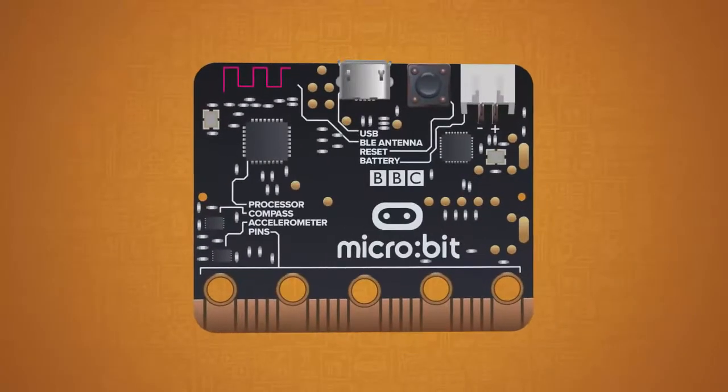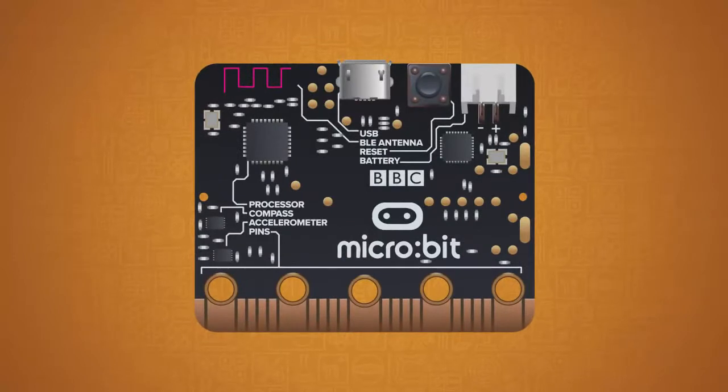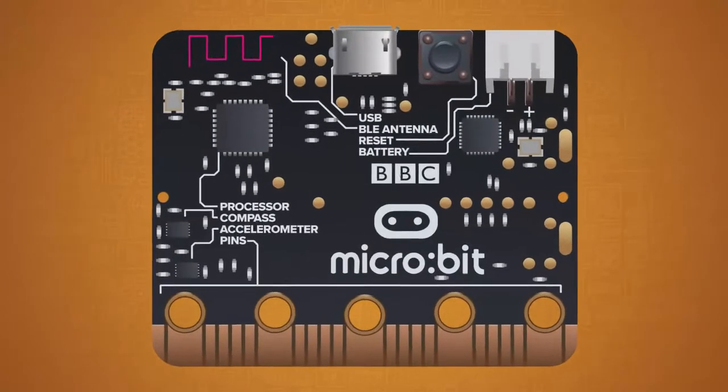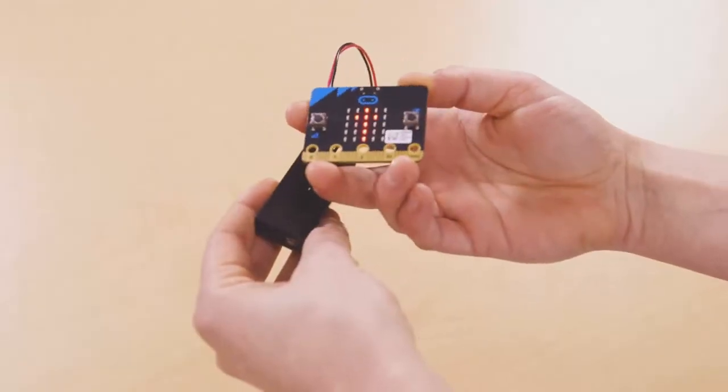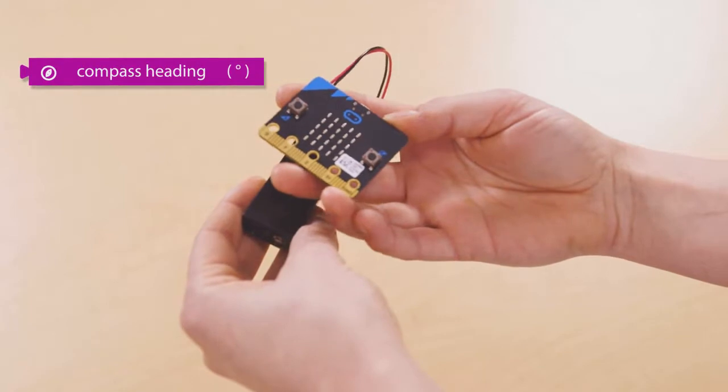On the back of your micro:bit you'll see two sensors that you can use to trigger events or actions. First, there's the compass. This sensor uses the Earth's magnetic field to detect the direction the micro:bit is moving.